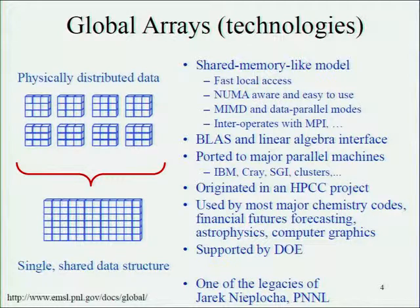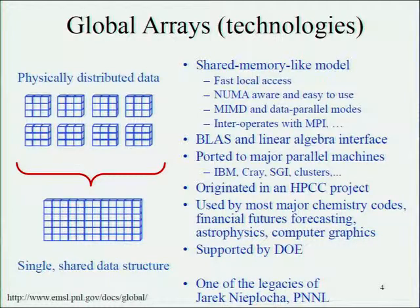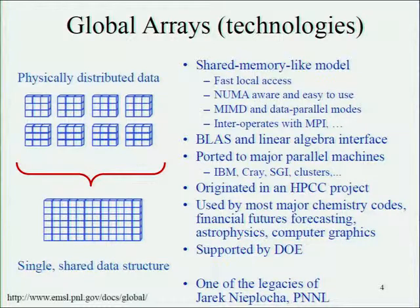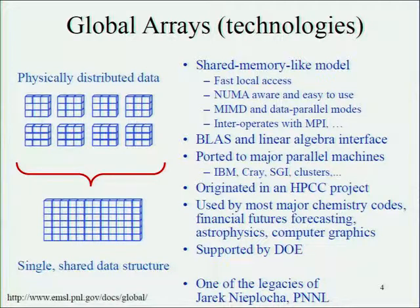The global array library provided a logically distributed, logical shared-memory view of data structures that were actually distributed. The key thing was it gave you one-sided access to that information — basically using primitive active-message-like communication behind the scenes. The application could address the data — a dense array — with indices that made sense to the application, the indices of the matrix, and get the patch of data it wanted without the explicit involvement of the process on the remote end.